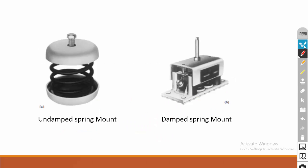This is an example of an undamped spring mount — a spring is present but there is no damper. This is a damped spring mount — both a spring and a damper are present. In the case of an undamped spring mount the system will take more cycles to come to rest. In the case of a damped spring mount the system will come to rest more quickly because damping is provided.